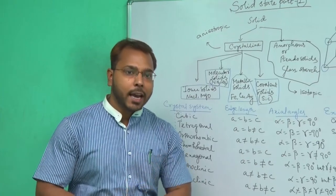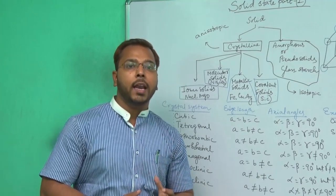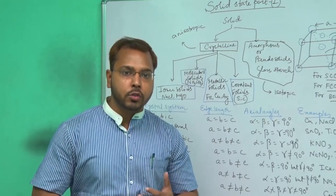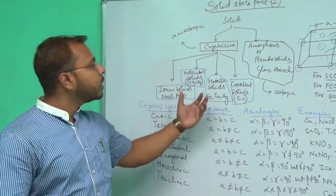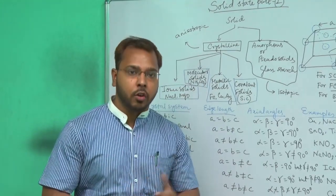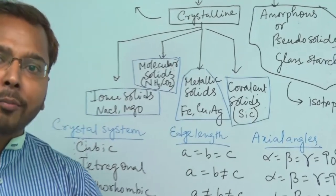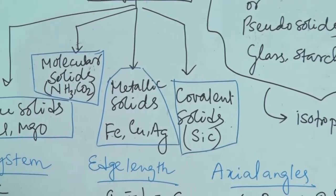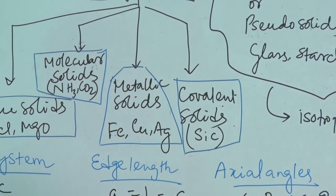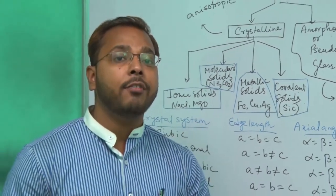Crystalline solids can be subdivided into: ionic solids, made of positively and negatively charged atoms; molecular solids such as solid ammonia and solid CO2, where molecules are attached by weak van der Waals forces; metallic solids, where positively charged kernels are surrounded by a free sea of electrons — examples are Fe, Cu, Ag; and covalent solids, made by non-metals like silicon carbide. Amorphous solids, or pseudo-solids, may be termed supercooled liquids because they don't have a sharp melting point — they have a range of melting points.